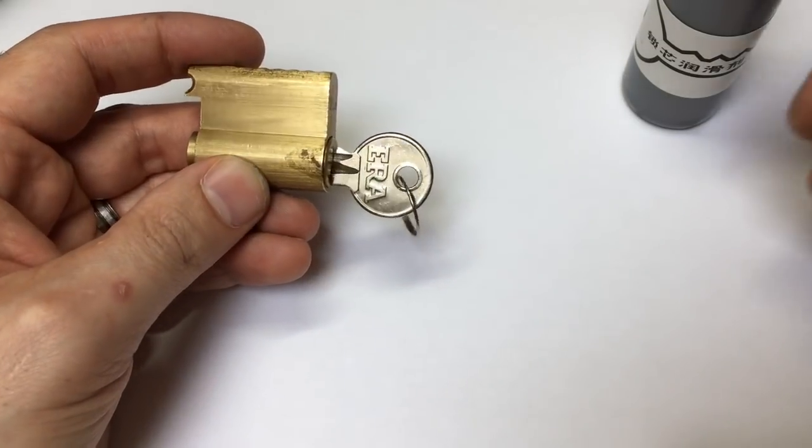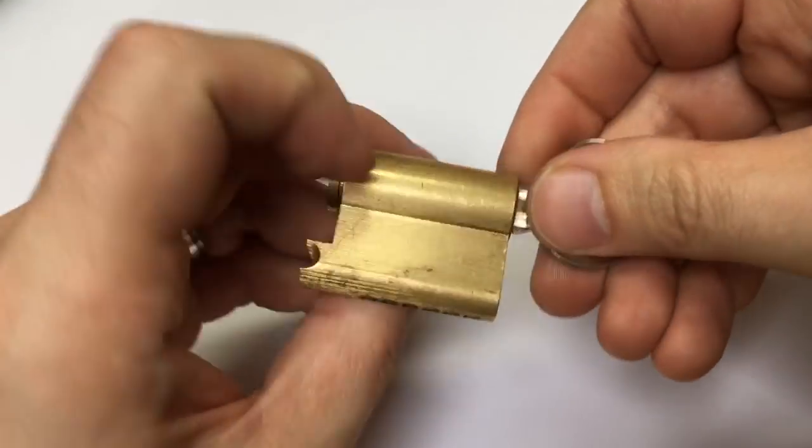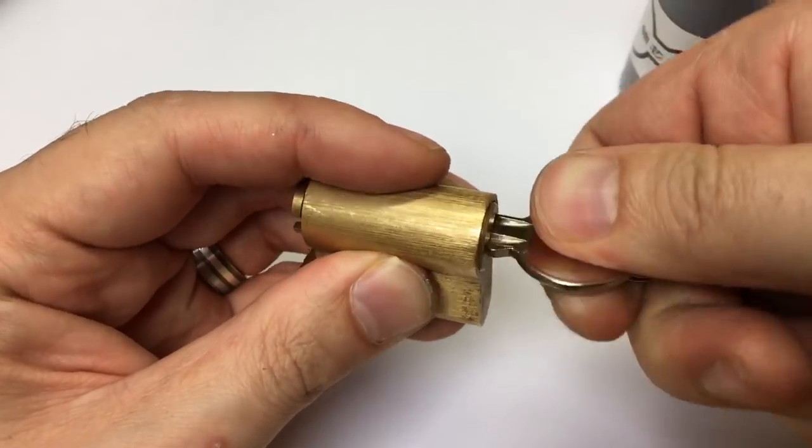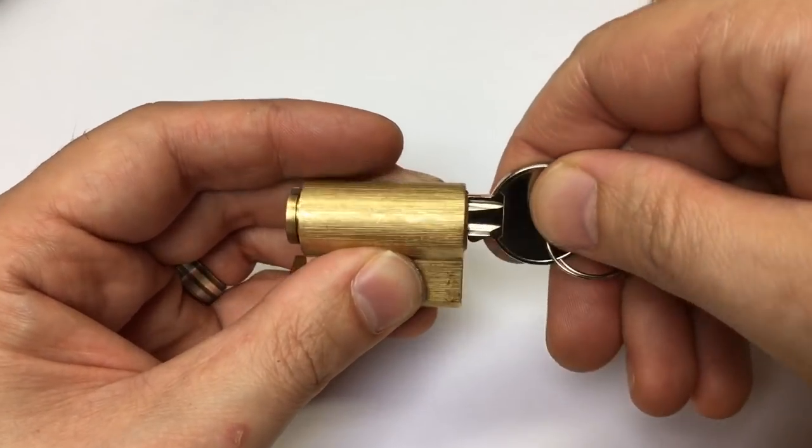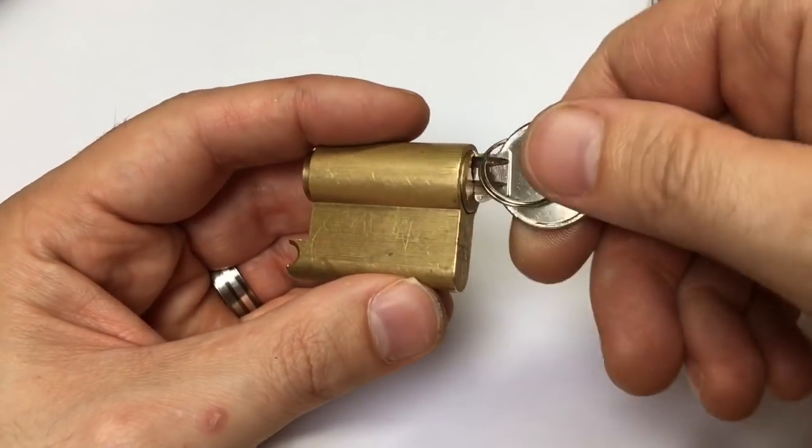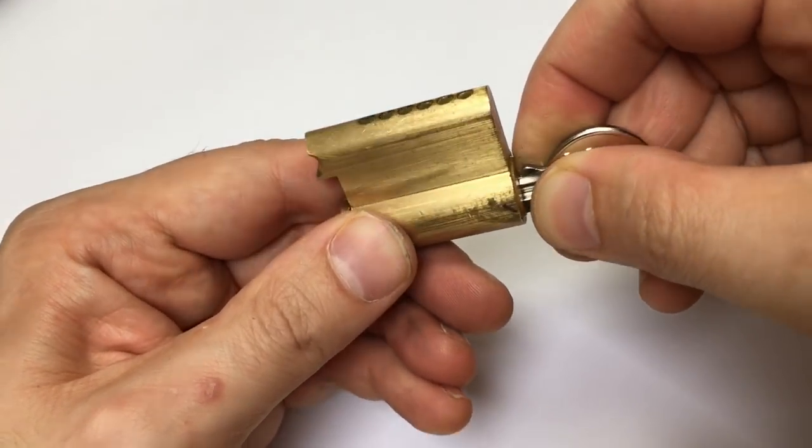So what we have now is our assembled Euro cylinder and it's okay, it works okay. It's a bit sticky actually, I think one of the key pins is worn and therefore it's a little shorter than it should be so it catches a bit. But let's lubricate this up so I'm just going to remove the key.